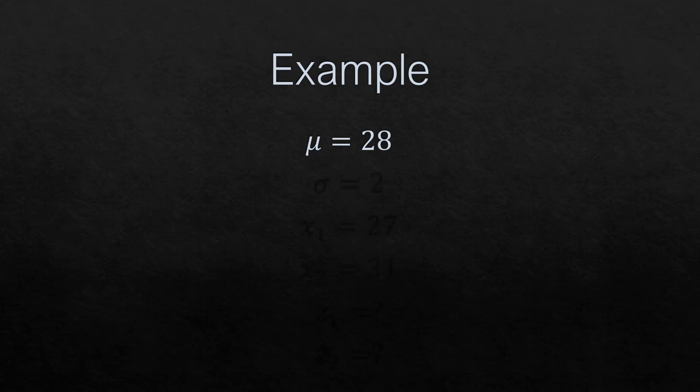The standard deviation is 2. The first value for the random variable X is 27, while the second one is 31. This is what we're going to transform.